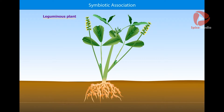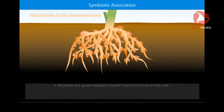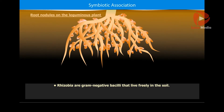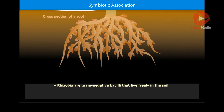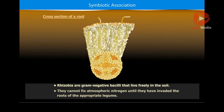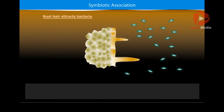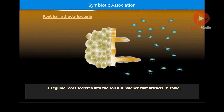You can view the cross-section of the leguminous plants. Rhizobia are gram-negative bacilli that live freely in the soil. They cannot fix atmospheric nitrogen until they have invaded the roots of the appropriate legume. Legume roots secrete into the soil a substance that attracts rhizobia.